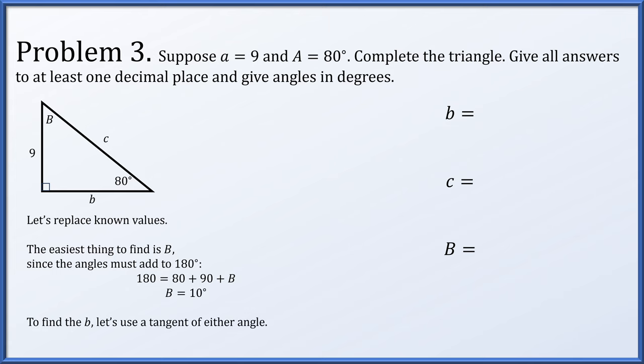To find side b, let's use a tangent, because that doesn't incorporate the hypotenuse, which we haven't solved for yet. Just be careful, however, whether you use angle A or angle B, the tangent of these angles will reverse what is considered opposite versus adjacent. So if we use the tangent of angle A, it's opposite over adjacent. And opposite of angle A is side a, and adjacent would be b. So the tangent of 80 degrees is 9 over b. Solving for b and computing, this is approximately 1.6.